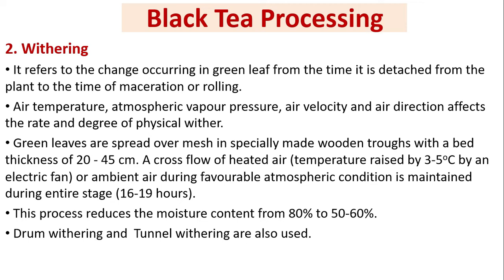Black tea processing — withering: this refers to the change occurring in green leaf from the time it is detached from the plant to the time of maceration or rolling. Air temperature, atmospheric vapor pressure, air velocity, and air direction affect the rate and degree of withering. Green leaves are spread over mesh in specially made wooden trays with a bed thickness of 20 to 45 cm. A cross-flow of heated or ambient air is maintained, and the process lasts 16 to 19 hours, reducing moisture content from 80% to 50–60%.